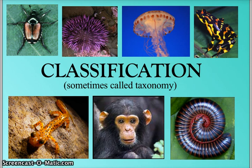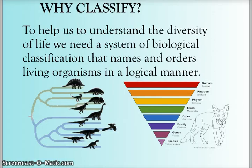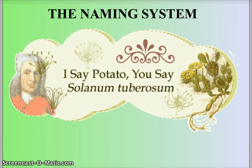Now that we've looked at how the tree of life is organized through branching mechanisms called cladograms, let's look at classification, which is often called the science of taxonomy. Scientists love to classify, and biologists are at the top of that list. We classify to understand the diversity of life — looking at the system of biological classification as a way of naming and ordering living things in a logical manner so that we understand how everything is interrelated.